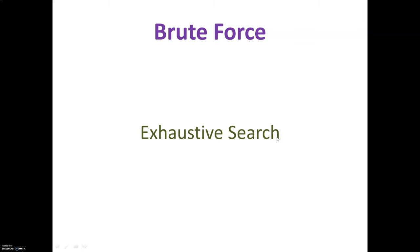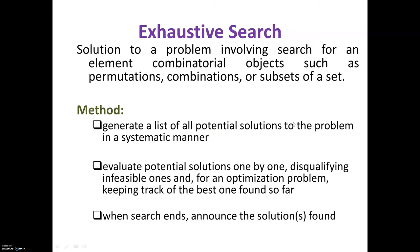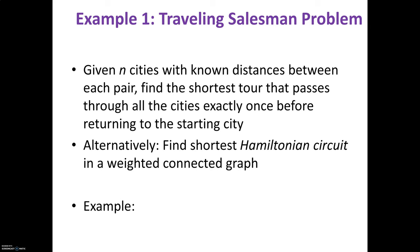One more example for brute force is exhaustive search. In exhaustive search we are finding the solution for combinatorial problems. Combinatorial problems involve combinatorial objects such as permutations, combinations, or subsets of a set. In this method, first you are required to generate all potential solutions in a systematic manner, then evaluate potential solutions one by one and disqualify infeasible ones. For an optimization problem, keep track of the best one found so far; when search ends you will find the solution.